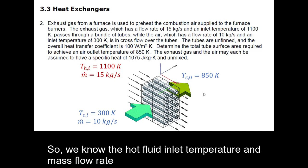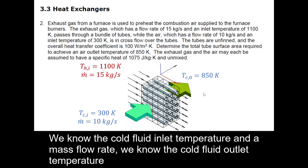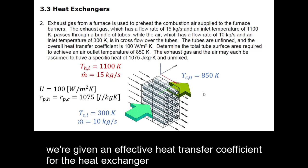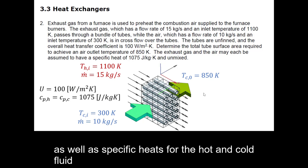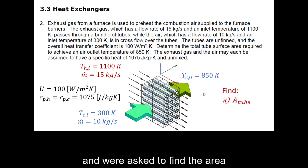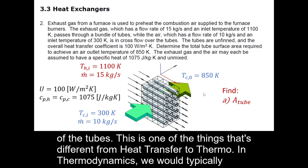So we know the hot fluid inlet temperature and mass flow rate. We know the cold fluid inlet temperature and mass flow rate. We know the cold fluid outlet temperature. We're given an effective heat transfer coefficient for the heat exchanger as well as specific heats for the hot and cold fluid. And we're asked to find the area of the tubes.